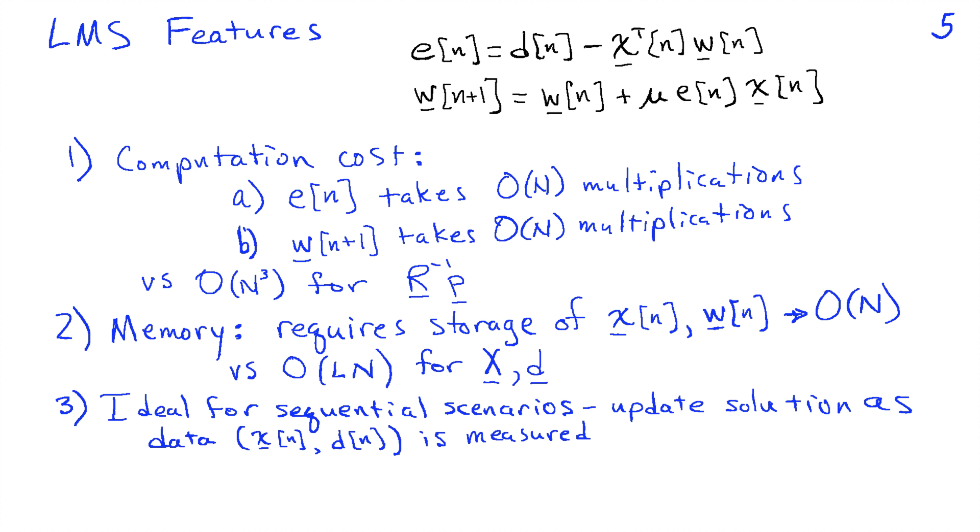Finally, this algorithm is really ideal and is designed for sequential scenarios where you want to update the solution as new data is measured. This allows us to potentially track a time varying solution and basically allow our iteration to run indefinitely. As long as we can afford the order N multiplications it takes at each step, we can just keep stepping as long as we want: millions, hundreds of millions, billions of steps.